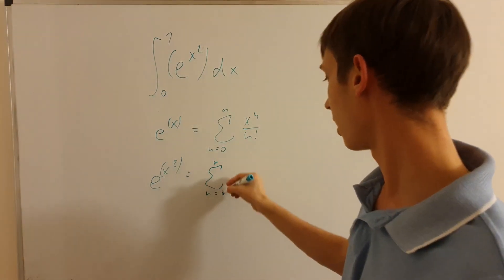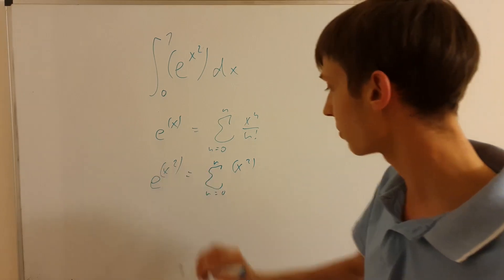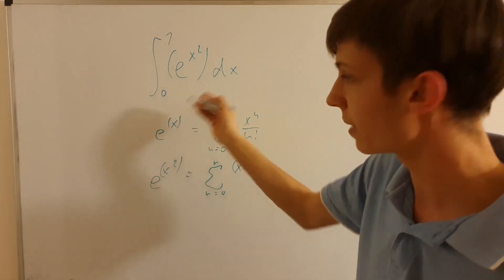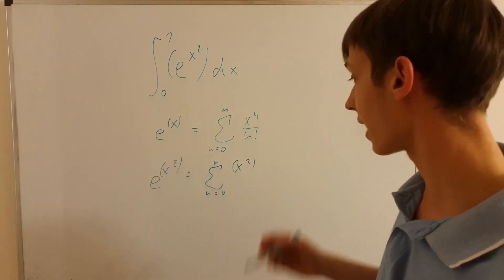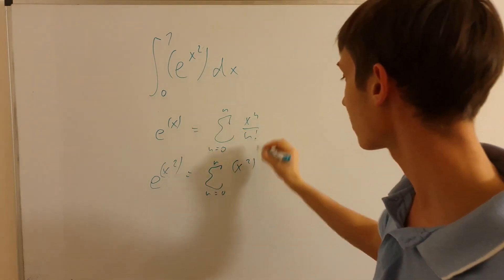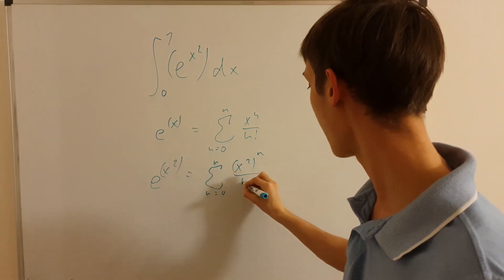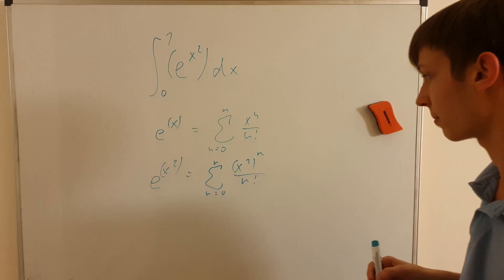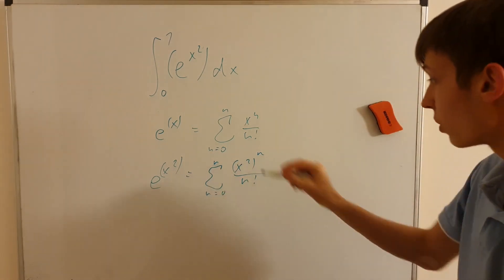So again, the same thing, but it's x to the second, because the argument in the exponential, so the exponential function is base e, the general Taylor expansion is this, but x to the second, again, the same, but where is x, you will put x to the second, to the n, and n factorial stays the same. So this is the point, this is the way it will be expanding. So how will this go?